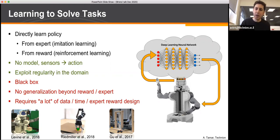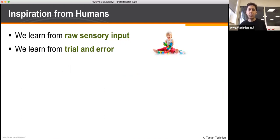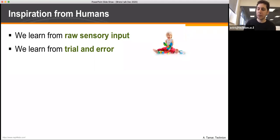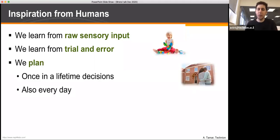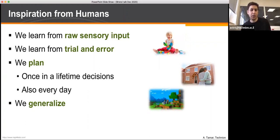It seems that both planning and learning have drawbacks. But let's look at humans for inspiration. We learn from raw sensory input and do some trial and error, but we also plan. This is clear in once-in-a-lifetime decisions, but we do it every day to avoid trial and error. We also generalize — we can solve new tasks we've never seen before just by thinking about them, planning some actions, and acting accordingly.